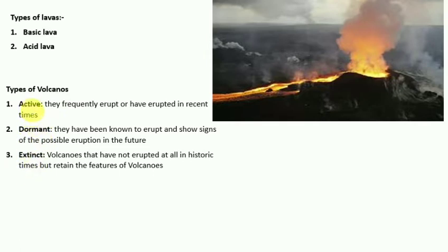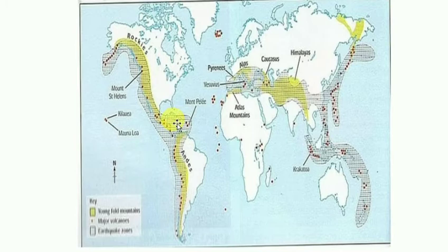Active volcanoes frequently erupt or have erupted in recent times. Dormant volcanoes have been known to erupt and show signs of possible eruption in the future. Extinct volcanoes have not erupted at all in historic times but retain the features of volcanoes. After covering volcanism, we now move to exogenic processes.